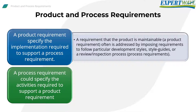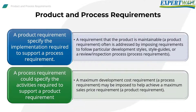A process requirement could also be said to specify the activities required to support a product requirement. For example, a maximum development cost requirement, which is a process requirement, may be imposed to help achieve a maximum sales price requirement, which is a product requirement.